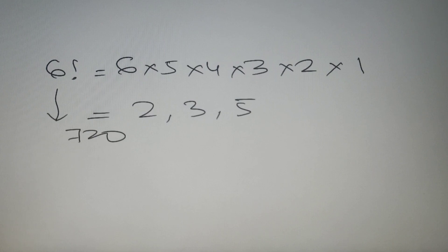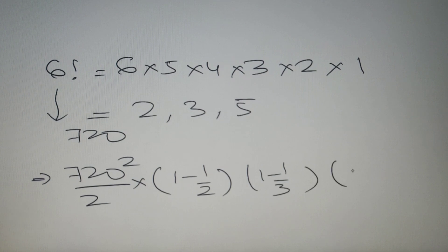So on calculation our value is equal to 720 whole square divided by 2 into (1 minus 1 by 2) into (1 minus 1 by 3) into (1 minus 1 by 5). Now we can calculate this value and this value will come out as 69120. Now this is how we can calculate the sum of co-primes for any given number.